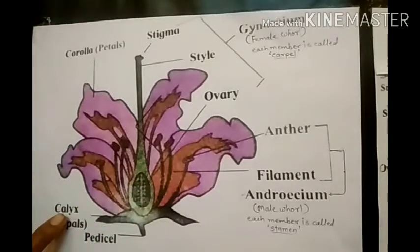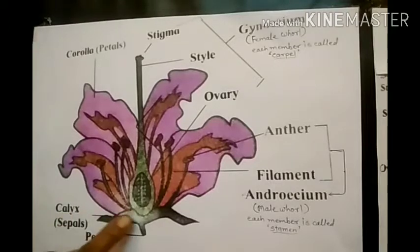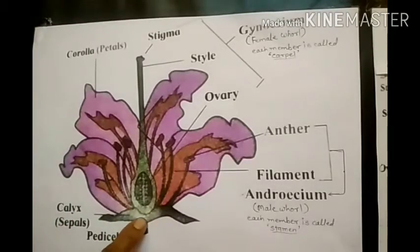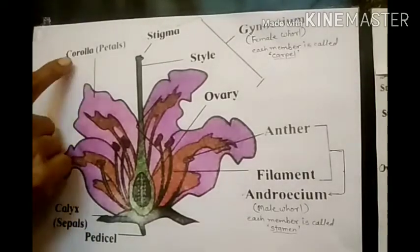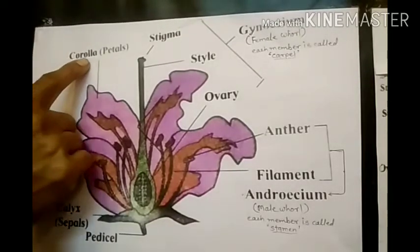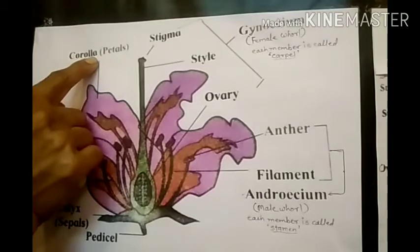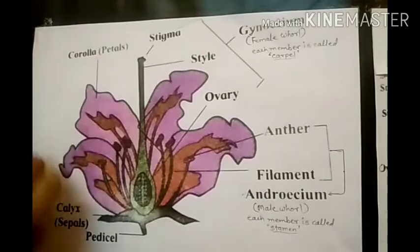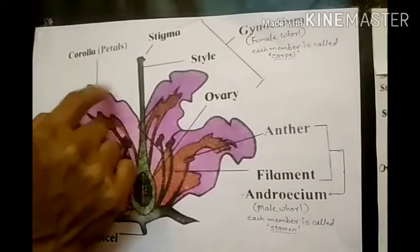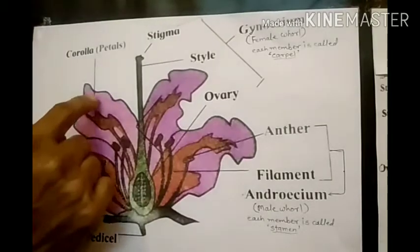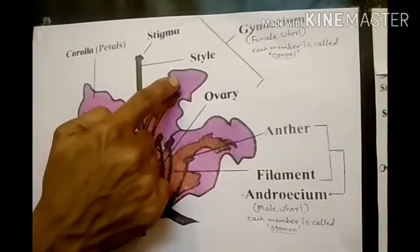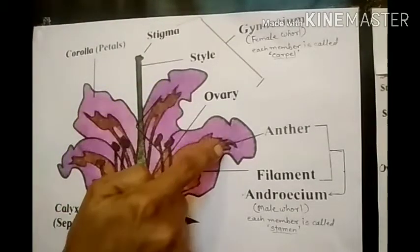The first whorl, the outermost, is the calyx — this green part is the calyx. Then inside that, the petals form the corolla, which is the pink part — what we call petals.